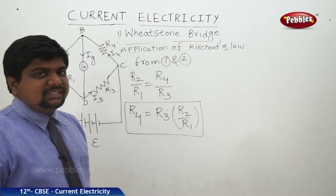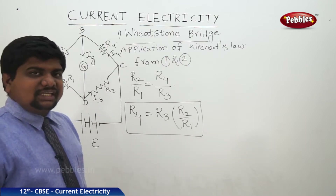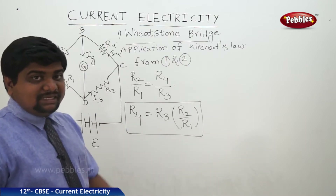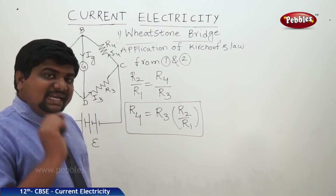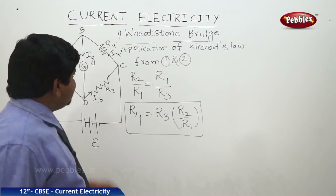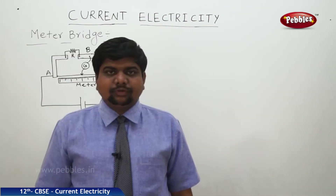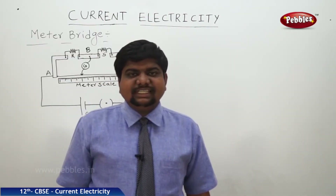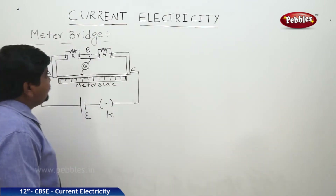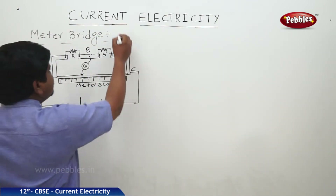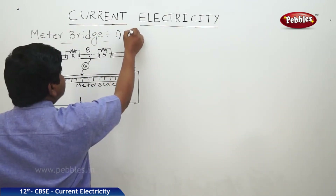Next, we are going to see one more application of Kirchhoff's law — nothing but the meter bridge. The meter bridge is the simplest form of Wheatstone bridge. Now we will see the meter bridge. This meter bridge is a simplified form of Wheatstone bridge.